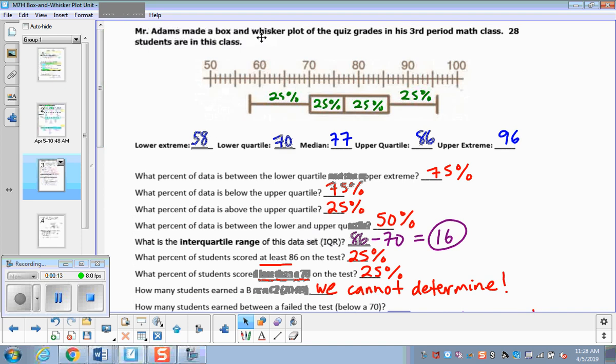And we can see that 28 students are in the class. The smallest or lowest grade I should say is a 58, and the highest grade somebody got was a 96. The number right there in the middle, if this is 75, it'd be 76, 77. This lower quartile is a 70, and this 75, 76, or sorry, excuse me, 85, 86 is the upper quartile.